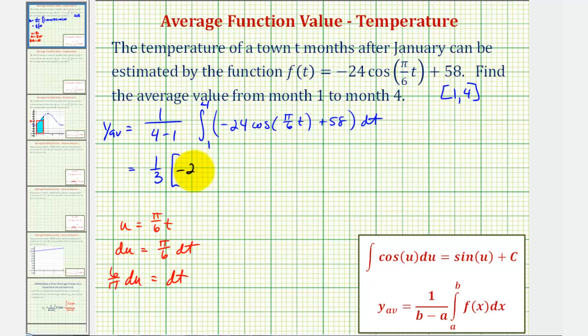We'd have negative 24 times six divided by pi times sine pi divided by six t, and then plus the antiderivative of 58 would be 58t. Now we'll evaluate this at t equals four, t equals one, and then find the difference.